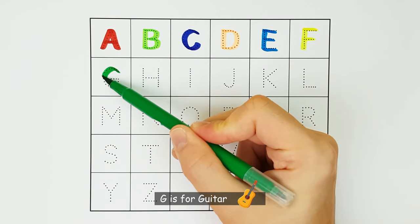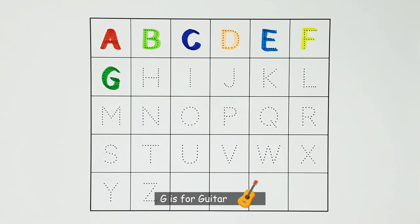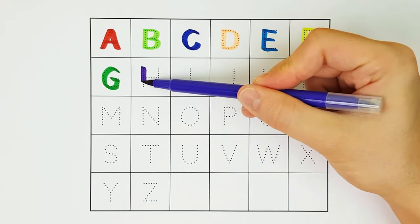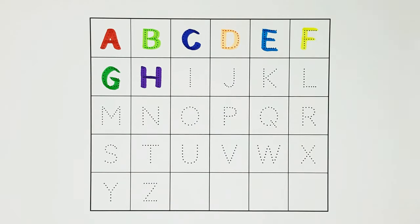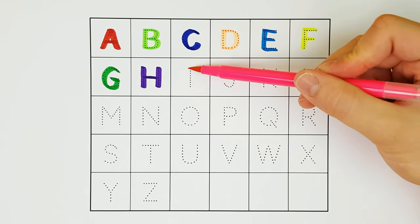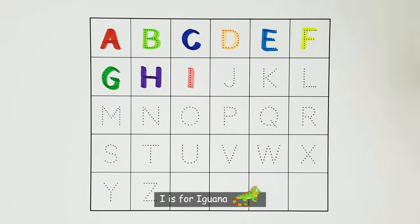G. G is for guitar. G. H. H is for heart. H. I. I is for iguana. I.